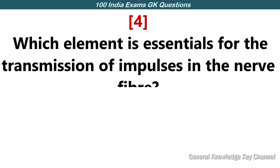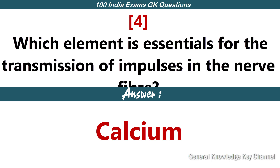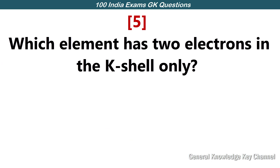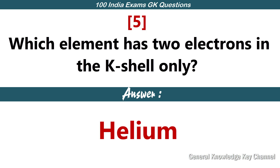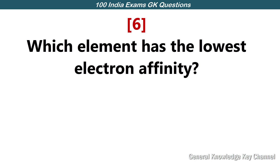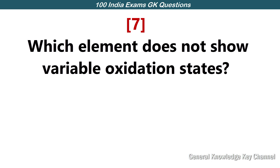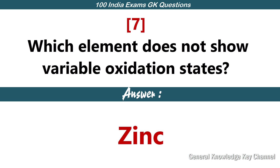Which element is essential for the transmission of impulses in the nerve fiber? Calcium. Which element has two electrons in the K shell only? Helium. Which element has the lowest electron affinity? Argon. Which element does not show variable oxidation states? Zinc.